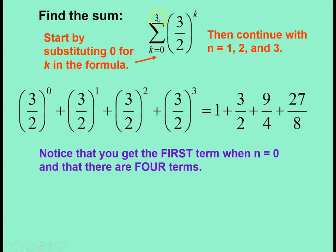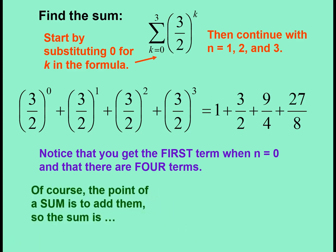A common mistake is that students think the number on the top is the number of terms. No, it is the last term number. In this case, since we started with 0 and ended with 3, we actually have 4 terms in this sequence. Of course, the point of a sum is to add them. So the sum is 65 eighths.